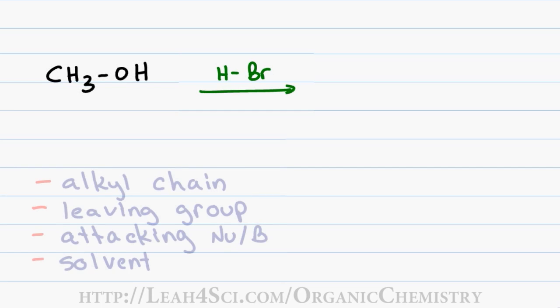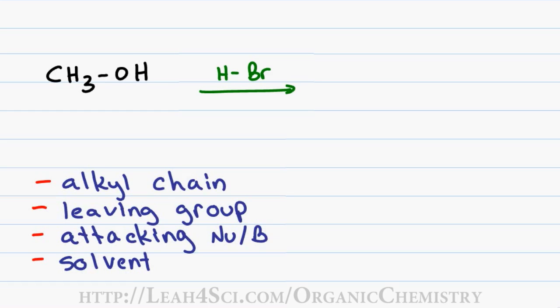In this reaction, we'll see what happens when you try to react methanol with HBr. We'll use the checklist to analyze the alkyl chain, leaving group, attacking nucleophile, and solvent to determine that an SN2 reaction can take place.